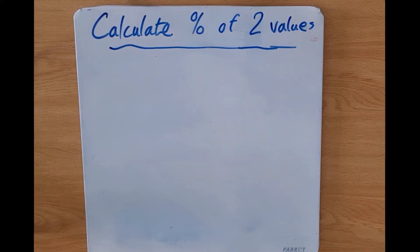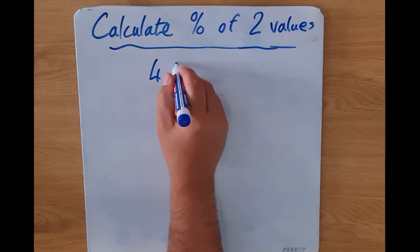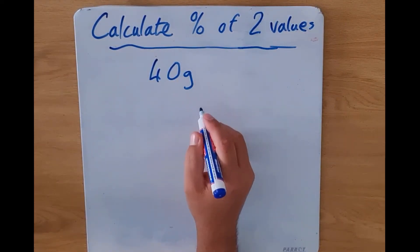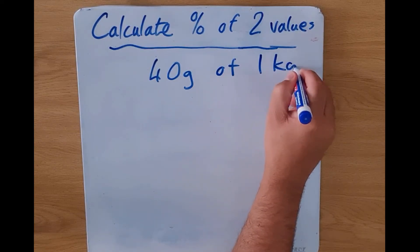Let's look at one more example but let's change it up a little bit. In the previous example we asked what percentage was 3000 of 5500? Now let's ask what percentage is 40 grams of 1 kilogram?